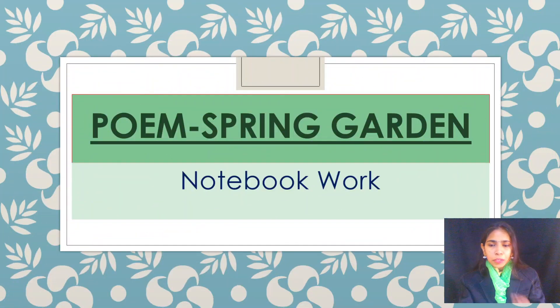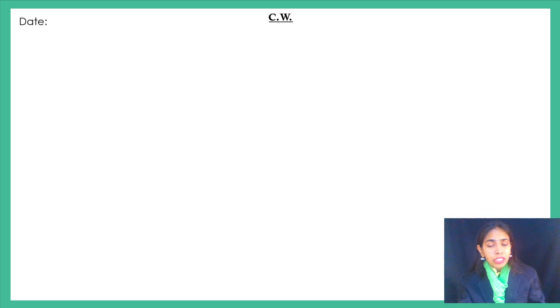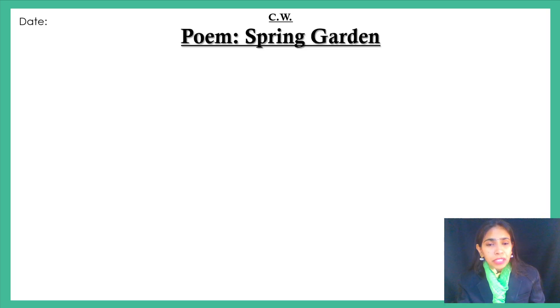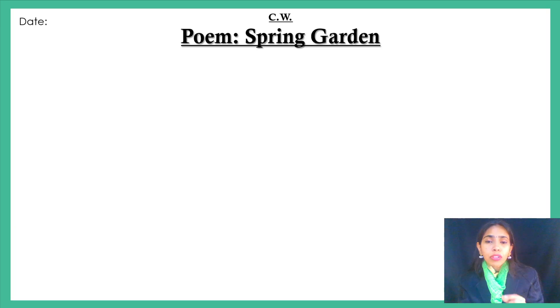First, as I said, Spring Garden is the poem we have learnt in literature. You know how your question paper will be — it will be MCQ based. Four options will be given and you have to choose the correct option. Questions can be like completing the lines of the poem where some words are missing and you have to fill those words by choosing the correct option.